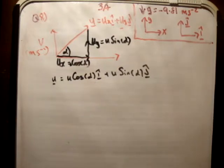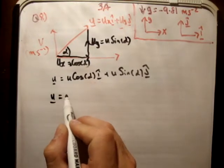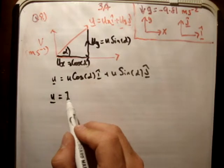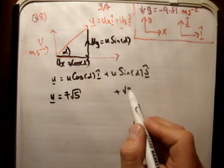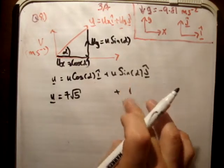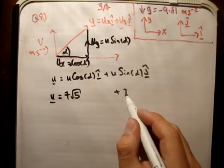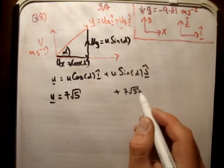So the next thing is, we need to plug in what we know. We know of course that u is equal to 7√5. Like so. Alright.